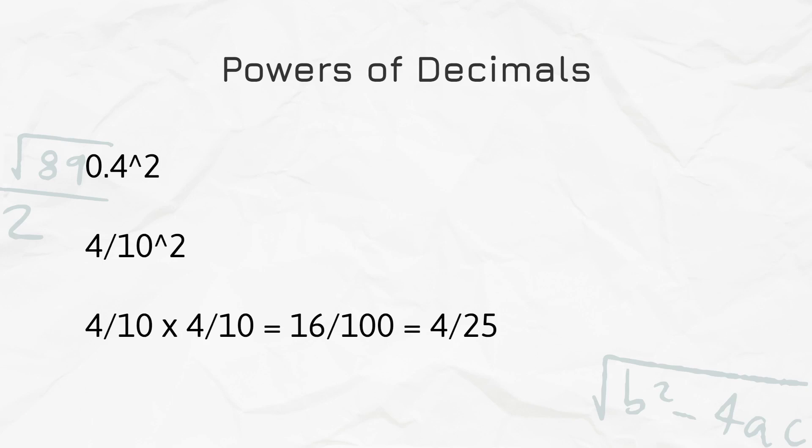This is for decimals, so decimals work a bit differently. So what is 0.4 to the power of 2? Well, basically we convert 0.4 to a fraction.